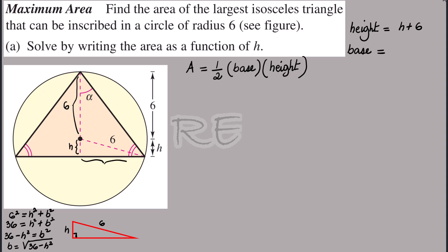The height of an isosceles triangle is the perpendicular bisector of the base, so the left side will also be the square root of 36 minus h squared. Altogether, the base is twice this amount, so the base is 2 times the square root of 36 minus h squared.